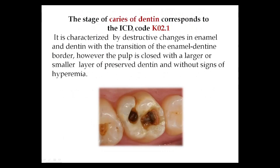Caries of dentin, code K02.1, is characterized by destructive changes in enamel and also in dentin, with the transition to the enamel-dentin border. However, the pulp remains closed with a larger or smaller layer of preserved dentin, and there are no signs of hyperemia — meaning changes occur in enamel and dentin but do not involve the pulp.